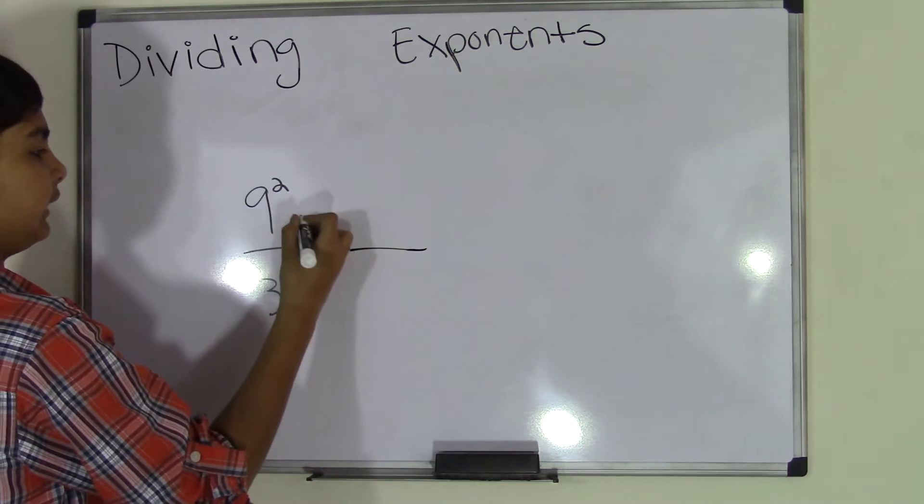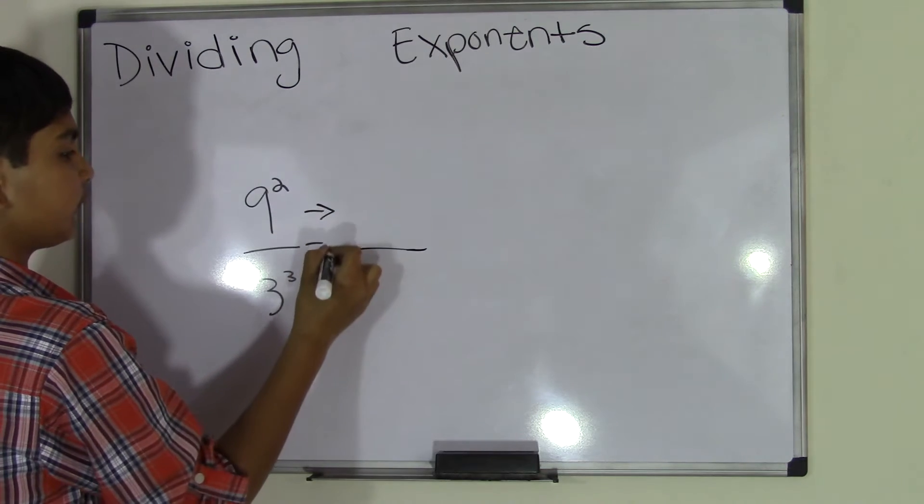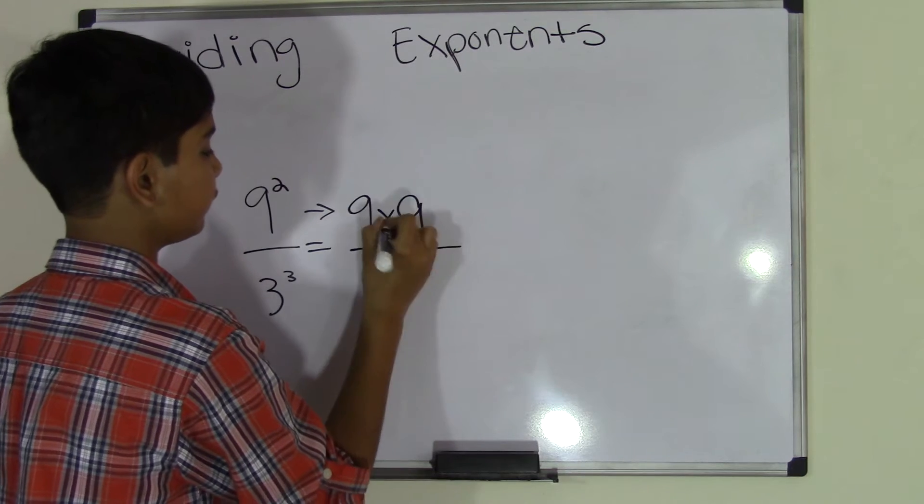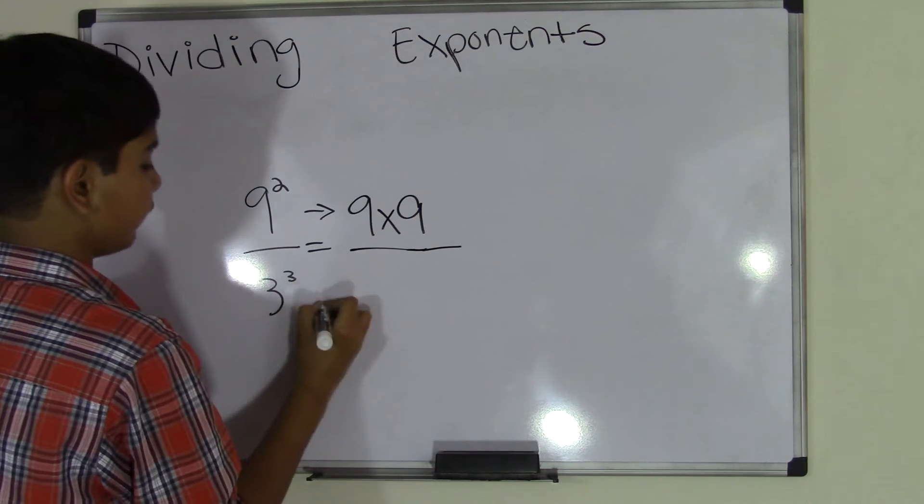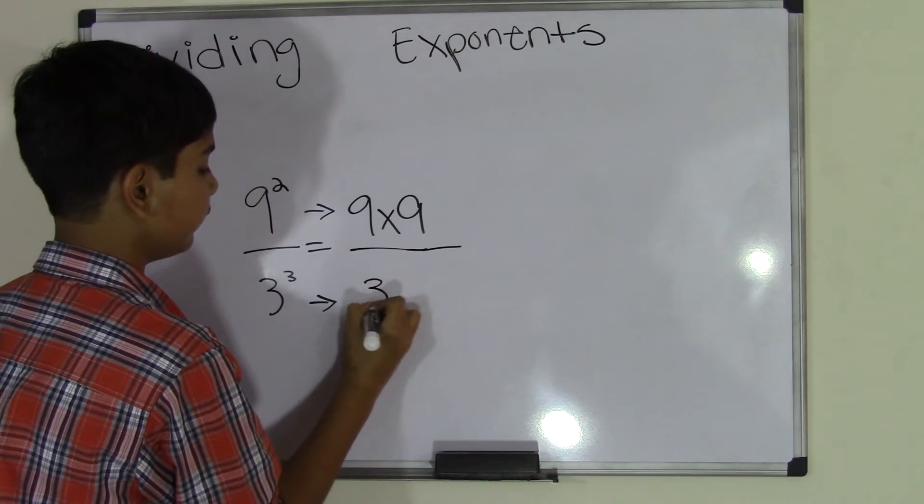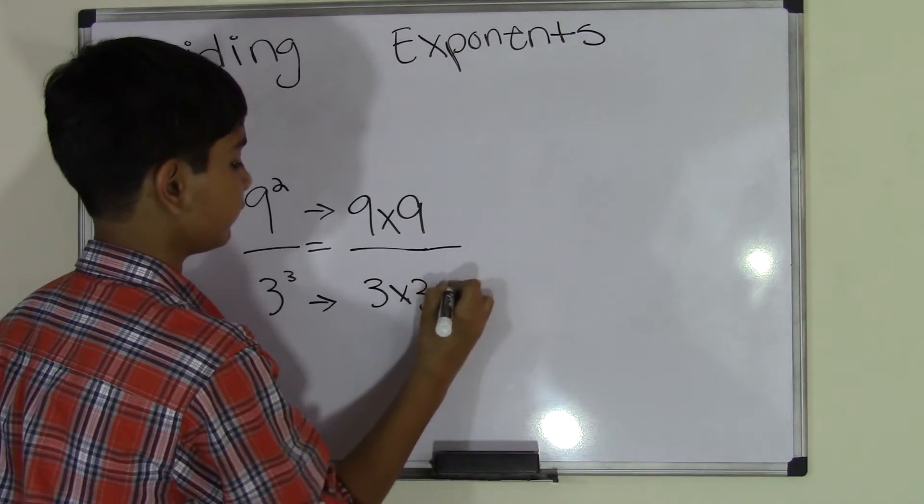And this time, let's simplify this and make this into a multiplication form. So we go 9 times 9 because 9 to the power of 2 is 9 times 9. And we do the same thing for 3 to the power of 3 and we get 3 times 3 times 3.